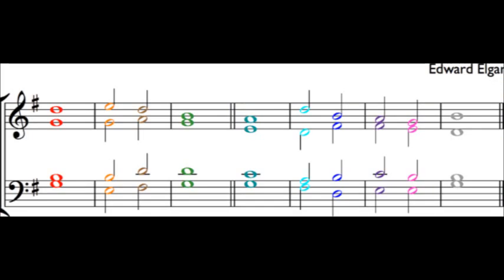Anglican Chant is a way to sing unmetrical texts, including psalms and canticles from the Holy Bible, by matching the natural speech rhythm of the words to the notes of a simple harmonized melody.